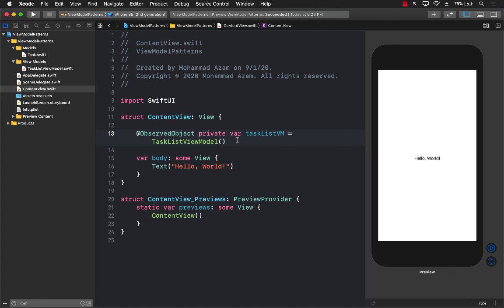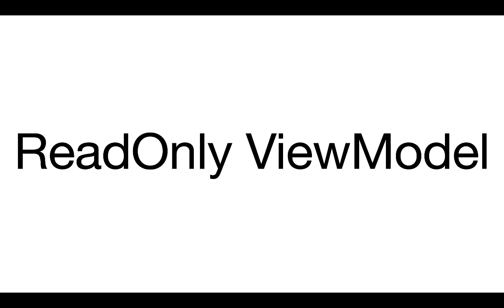Let's move to the next pattern: read-only view models. Read-only view models, as the name says, are used only to display information. You cannot really change any information, though you can use the parent of the read-only view model to do that. The whole purpose of a read-only view model is to just give data to the view, and sometimes it can also format the data a little bit.